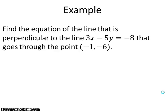Our given line is 3x minus 5y equals negative 8, and we want the perpendicular line that goes through the point (-1, -6). For these types of problems, you're going to be solving them algebraically — you don't have to graph them. We're going to look at the graph just to check our work, but these problems should be done by working with equations.